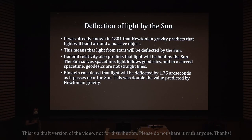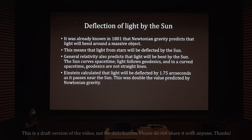Next, I want to talk about deflection of light by the sun. It was already known in 1801 that Newtonian gravity predicts that light will bend around a massive object, meaning that light from stars will be deflected by the sun.